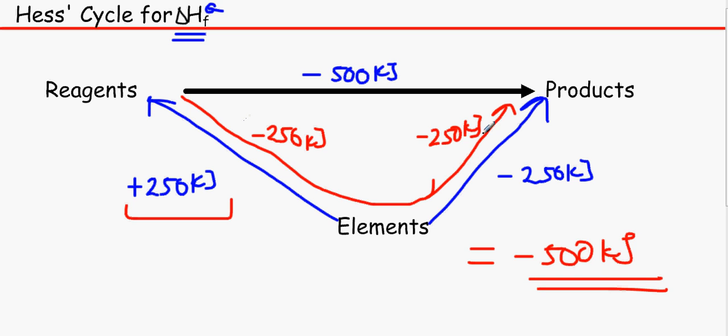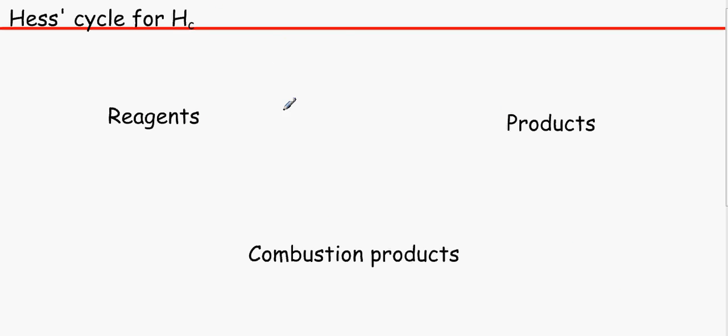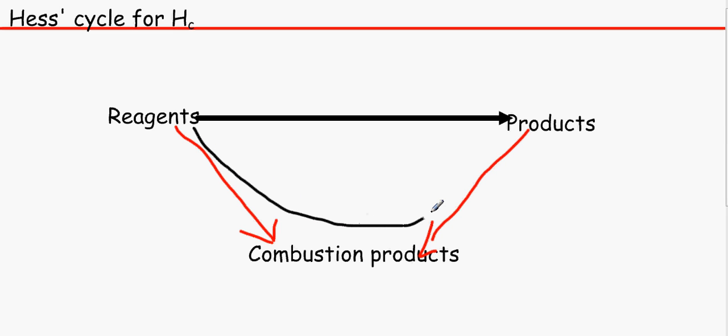And that would equal minus 500 kilojoules. As you can see, this direction, this route took exactly the same energy as if we took the top route. Same thing with combustion. If we know how much energy was released when we burnt the reagents to make the combustion products, and we know how much energy was needed to combust the products into combustion products, we can find out what the energy change from the reagents to the products actually is by going through this route over here.